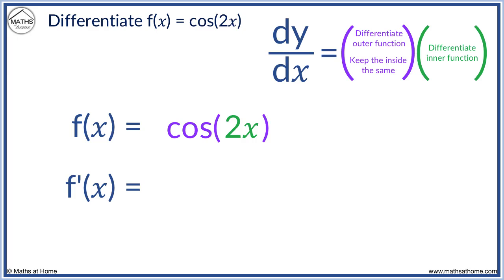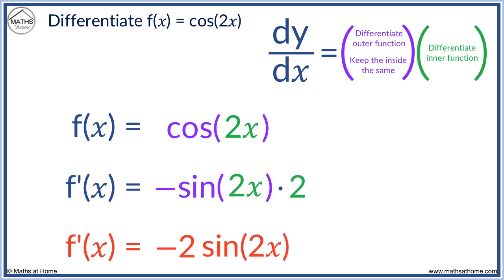Cos differentiates to minus sine and we keep the inside of the function 2x as 2x. We then multiply this by the derivative of the inner function. 2x differentiates to 2. We can write f dash x as minus 2 sine 2x.